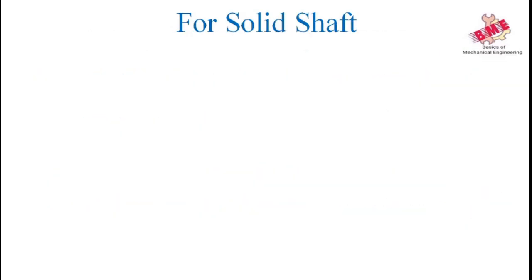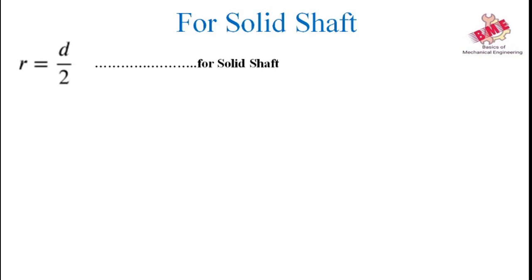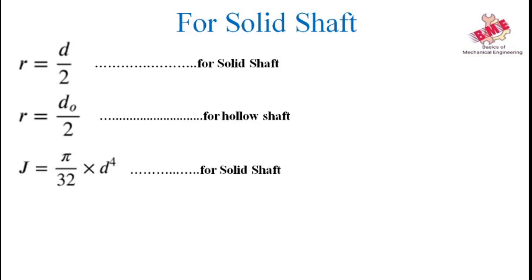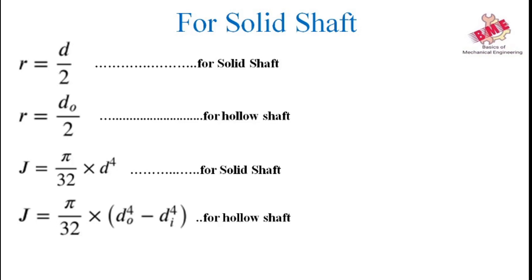We will see for both solid shaft and hollow shaft the formulas required to design a shaft by twisting moment. R is equal to D/2 for solid shaft. For hollow shaft, R is equal to D₀/2, where D₀ means outer diameter and Di means inner diameter of the hollow shaft. Polar moment of inertia J is equal to π/32 × D⁴ for solid shaft, and J is equal to π/32 × (D₀⁴ − Di⁴) for hollow shaft.